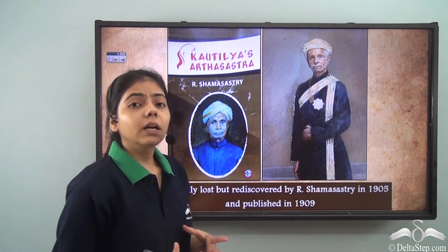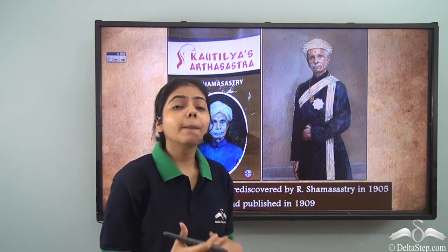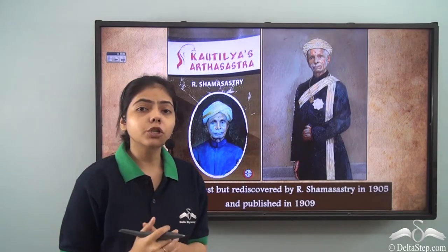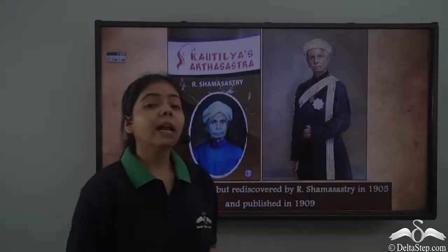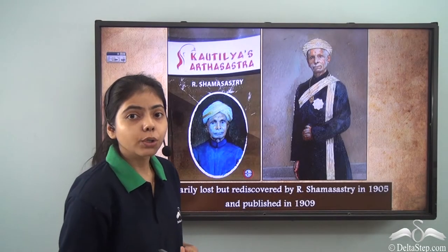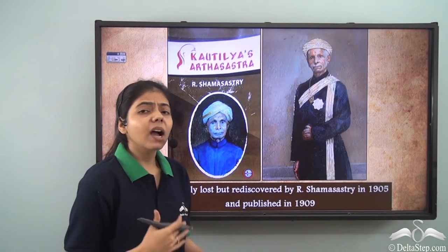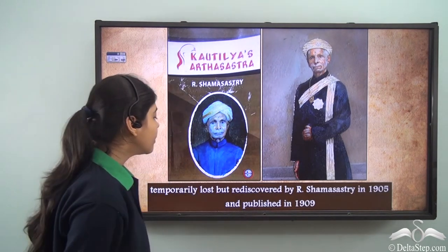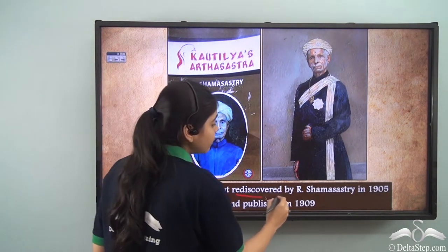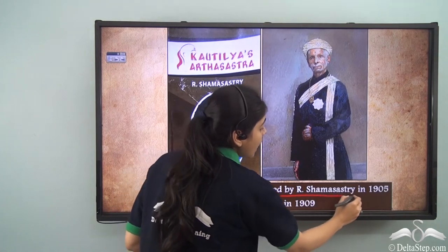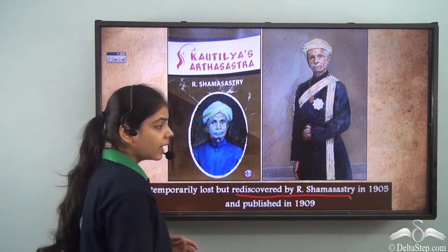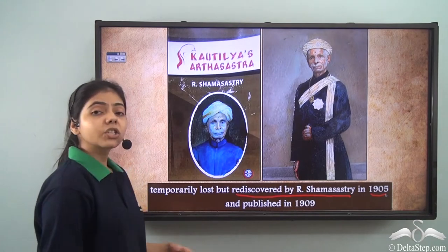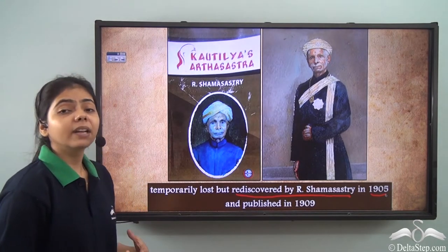The Arthashastra was completed between the 2nd and 3rd century BC and was in use till the 12th century, after which it was temporarily lost. It was rediscovered by R. Shamasastri in 1905 and was published in 1909.